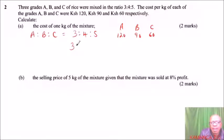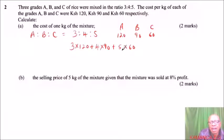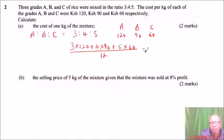3 kg of A multiplied by the cost of A which is 120, plus 4 kg of B at cost 90, plus 5 kg of C costing 60 shillings. Total kilograms: 3 plus 4 plus 5 equals 12 kg. This is the cost of 12 kg all in that ratio, so if we divide by 12 we get the cost of 1 kg.